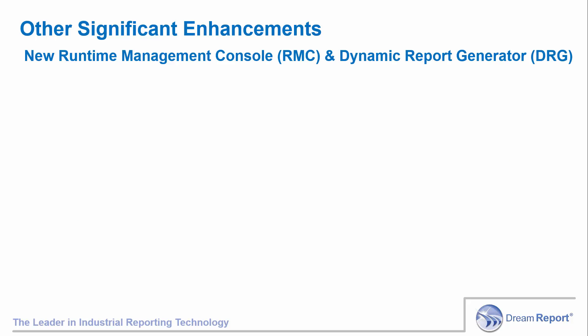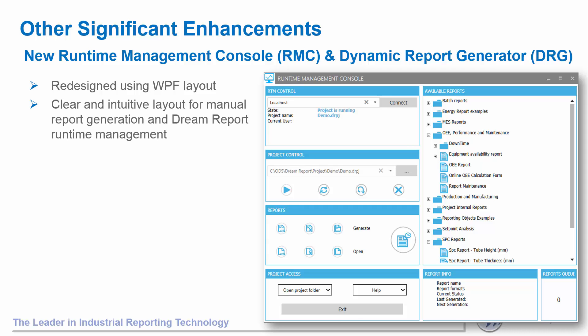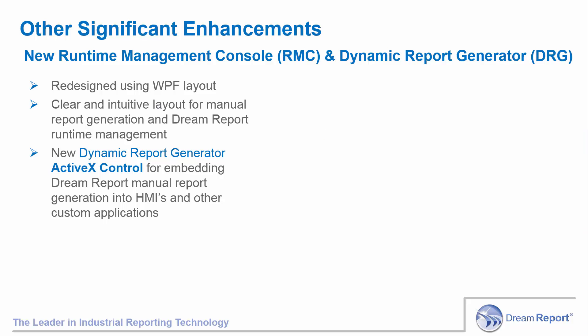The DreamReport Runtime Management Console and Dynamic Report Generator, developed using Windows Presentation Foundation technology, has a modernized look and feel, giving the user a clear, informative, and intuitive layout for managing runtime tasks and manually generating reports. Here we see the steps to select a report, specify a time period on the fly, and then generate the report in the selected format or formats, and whether to automatically email or print the report output. It couldn't be simpler. Additionally, the Dynamic Report Generator ActiveX Control has also been updated with the same intuitive layout for your operators to use directly in an HMI screen.